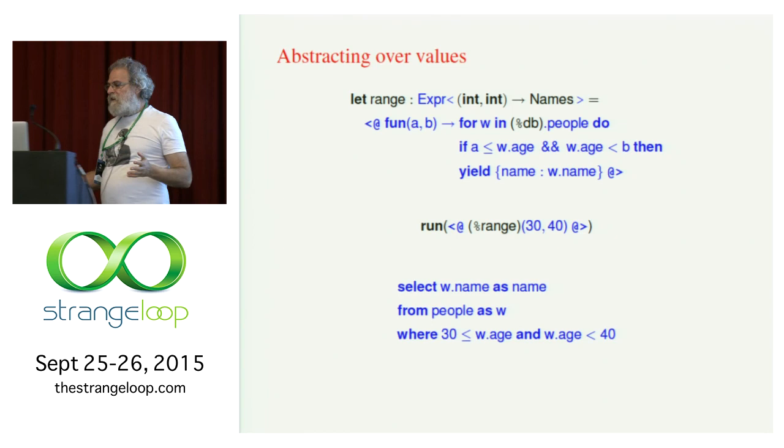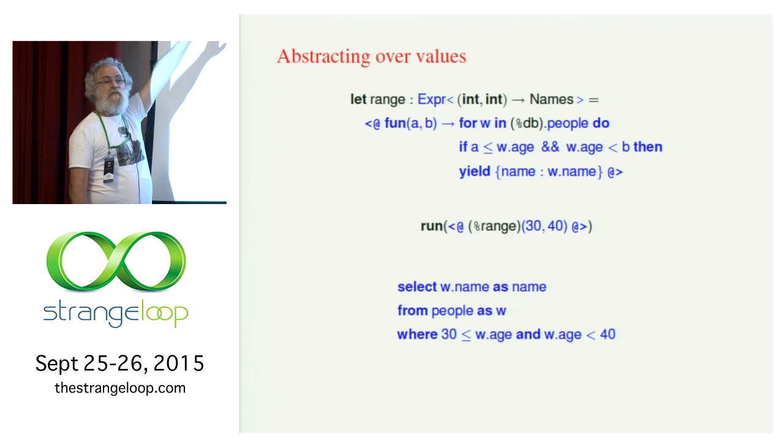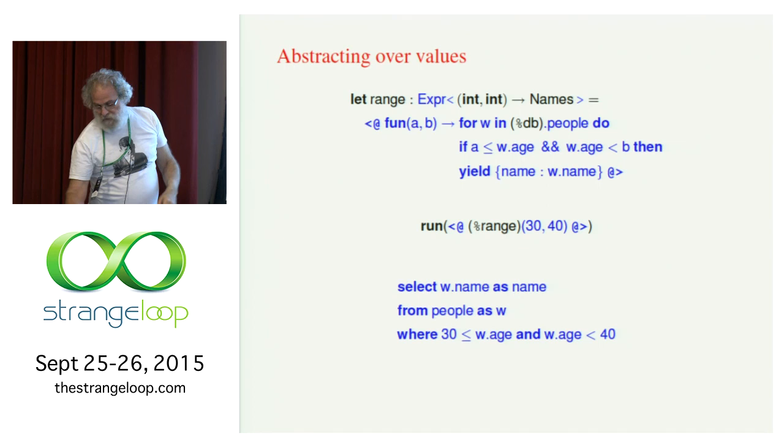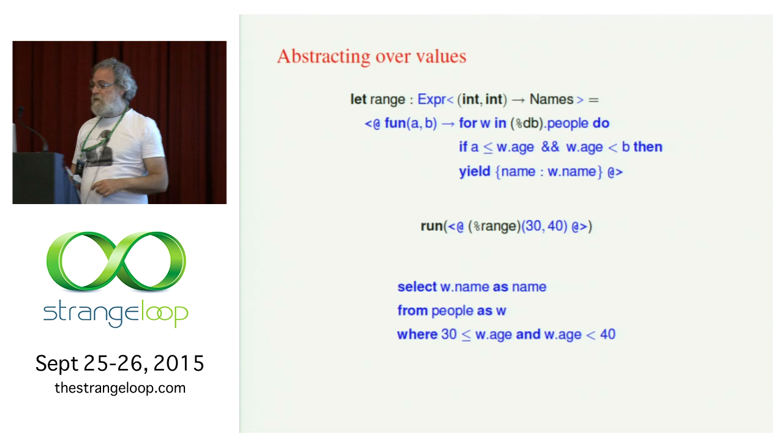Fun, by the way, is the keyword for introducing a function. So it's just a function that takes two arguments A and B and returns the value — in this case a table of names — to the right of the arrow. Fun is, of course, the keyword in F# that stands for lambda. So let's do something more interesting.